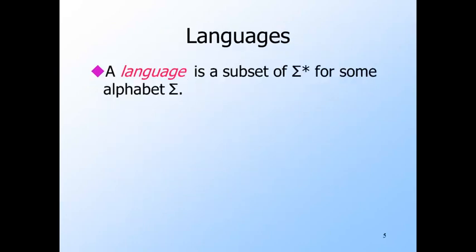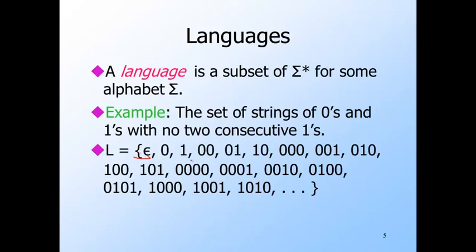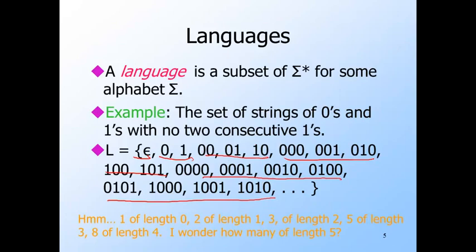Languages are sets of strings, and they can be finite or infinite sets. Here's an example of a language L whose alphabet is {0,1}, containing all strings of zeros and ones that do not have two consecutive ones. The empty string is there, and both strings of length one. Of the strings of length two, all are there except '11,' because that obviously has two consecutive ones. Five of the eight possible strings of length three are there, as are eight of the sixteen strings of length four. For lengths zero through four, we see counts of 1, 2, 3, 5, and 8 strings. Do you recognize the sequence? Can you extend it to strings of length five, six, and so on, and prove your prediction is correct?